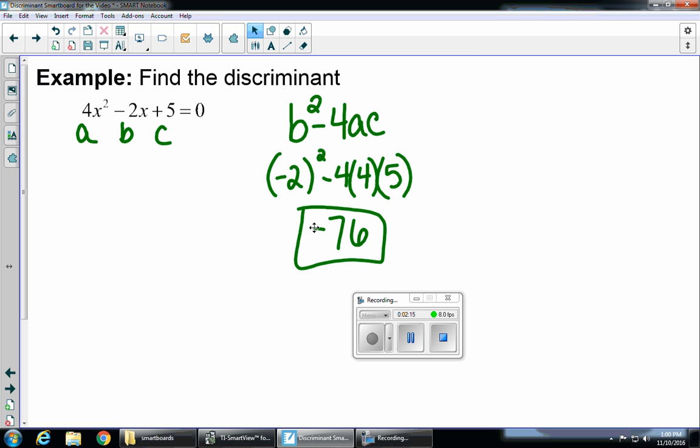So, now that I've found the discriminant, the question is, what does that tell me about the roots? So, because this discriminant is a negative number, negative 76,